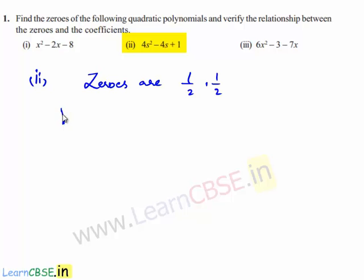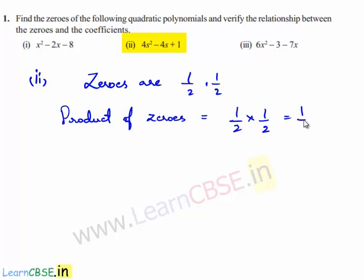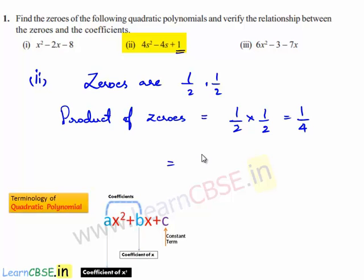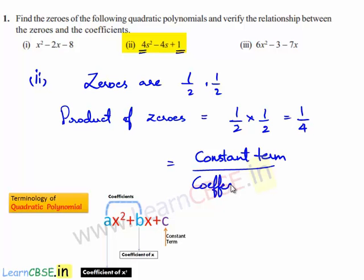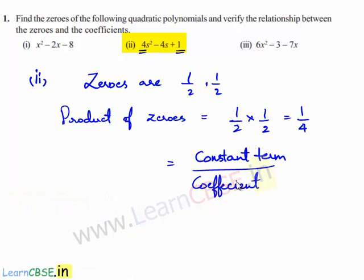The product of the zeros is equal to 1/2 times 1/2, which is 1/4. Here, 1 is the constant term and 4 is the coefficient of s². So we can say that the product of the zeros is equal to the constant term divided by the coefficient of s².